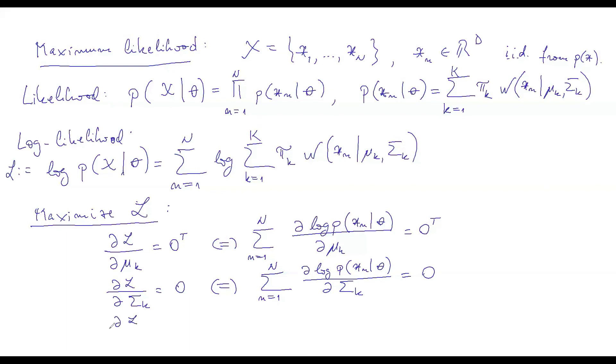And finally, we have the partial derivative of L with respect to pi k. Also, we are setting it to be number zero. And that is the same as saying that the sum from 1 to n of this log p of xn given theta, partial derivative with respect to pi k. This has got to be zero.